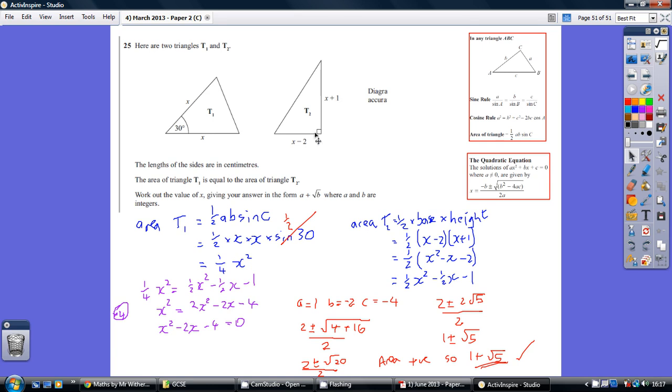Now moving over to triangle T2, well that is a right angled triangle, that's an easier area to work out. It's just half times base times height, so half x minus 2 times x plus 1. A pair of brackets, multiply that out using foil, times this by a half, we get this. Half x squared minus half x minus 1.